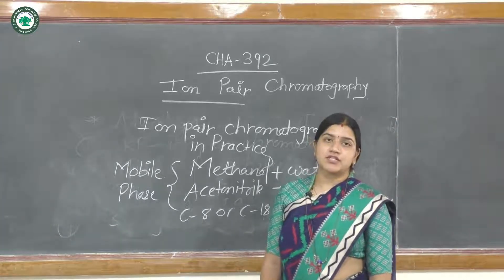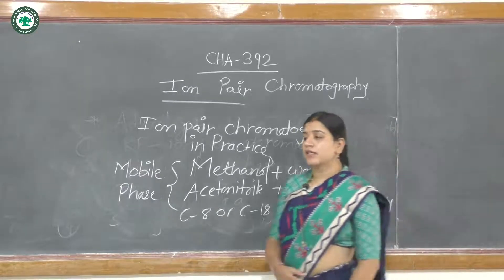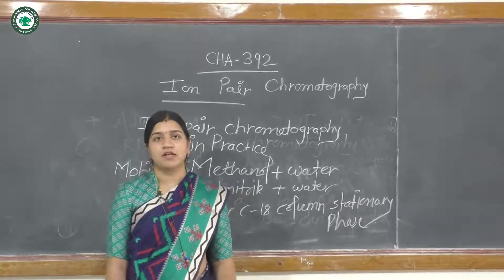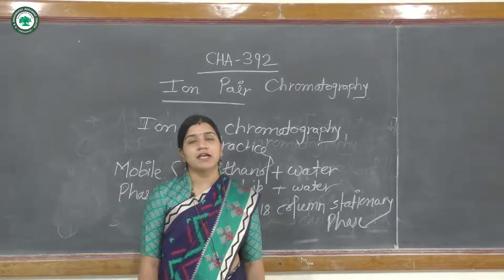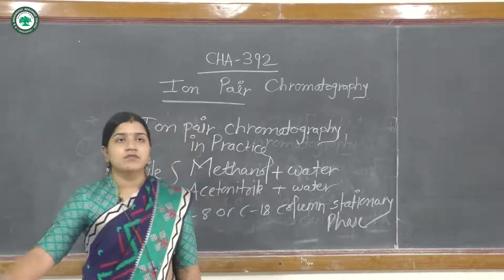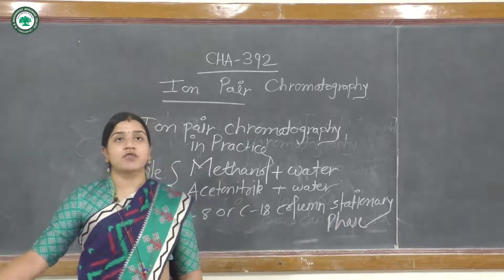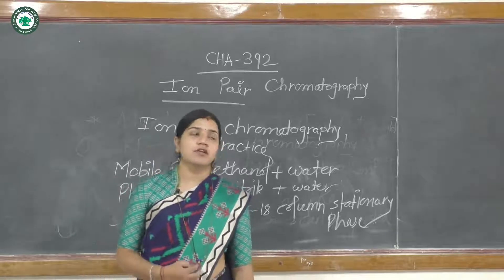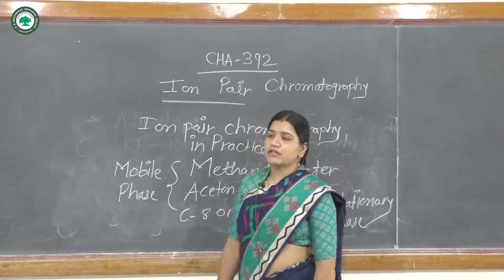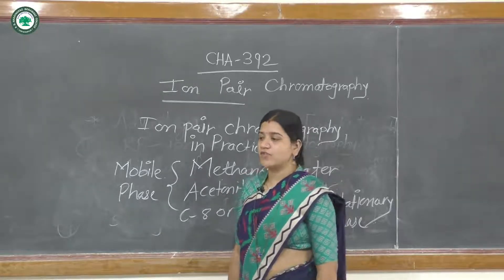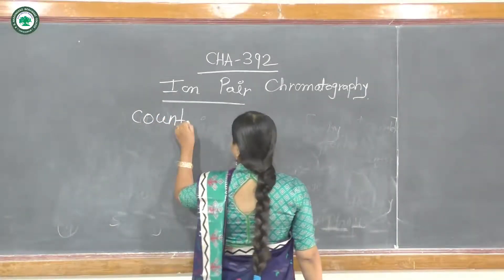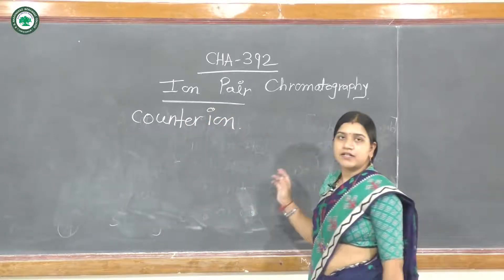Along with the stationary phase and mobile phase, the next important point is how to maintain the pH value. You have to consider the pKa value and select the appropriate pH accordingly. The choice of counter ion plays a very important role in ion pair chromatography. We will now look at the counter ions and which compounds they are suitable for analyzing.